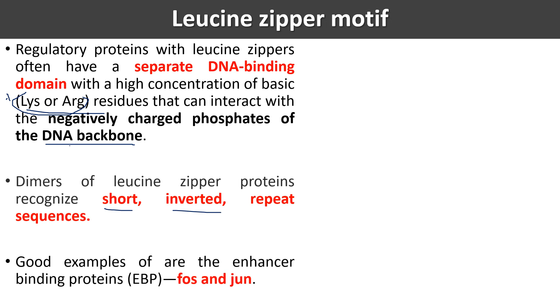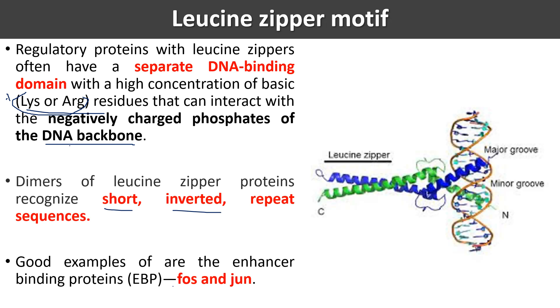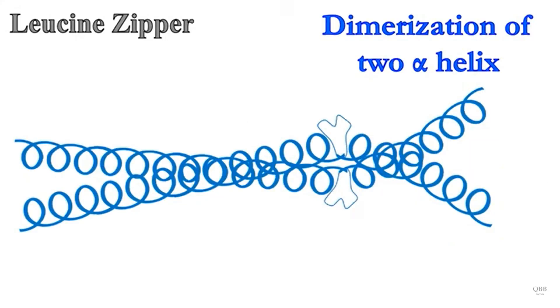Dimers of leucine zipper proteins recognize short inverted repeats in sequences of the DNA. A good example of this is the enhancer binding proteins Fos and Jun regulation.